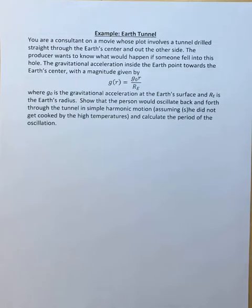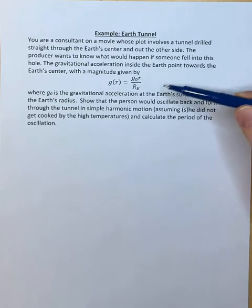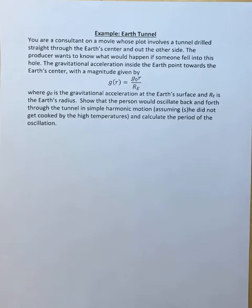Okay, so here's perhaps a more fun example of simple harmonic motion and one that we can also relate to circular motion. You are a consultant on a movie whose plot involves a tunnel drilled straight through the earth's center and out the other side. The producer wants to know what would happen if someone fell into this hole. The gravitational acceleration inside the earth points towards the earth's center with the magnitude given by g(r) = g₀r/rₑ where g₀ is the gravitational acceleration at the earth's surface and rₑ is the earth's radius. Show that the person would oscillate back and forth through the tunnel in simple harmonic motion and calculate the period of oscillation.